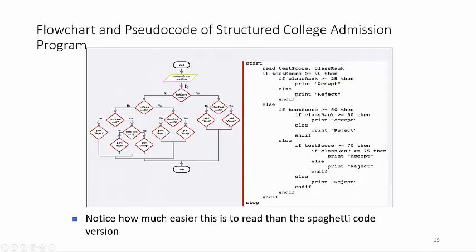Earlier we had this flowchart that was spaghetti code, coming back and forth. Here is an example of the same flowchart. If you have a certain test score and a certain class rank, you're going to be accepted to college admission. Notice how easy this is to flow through.